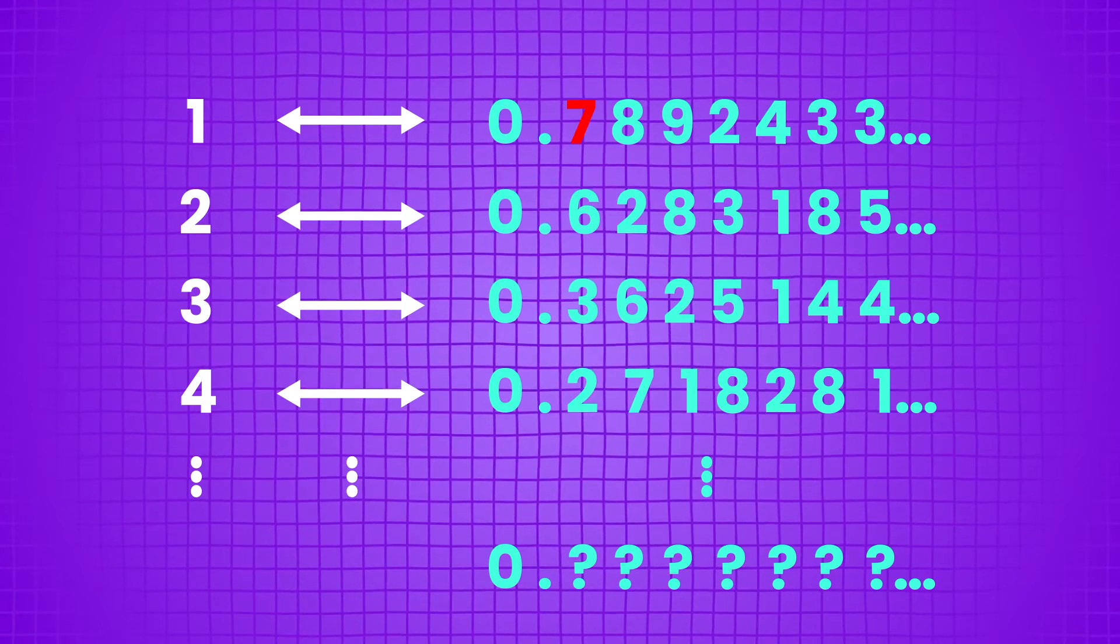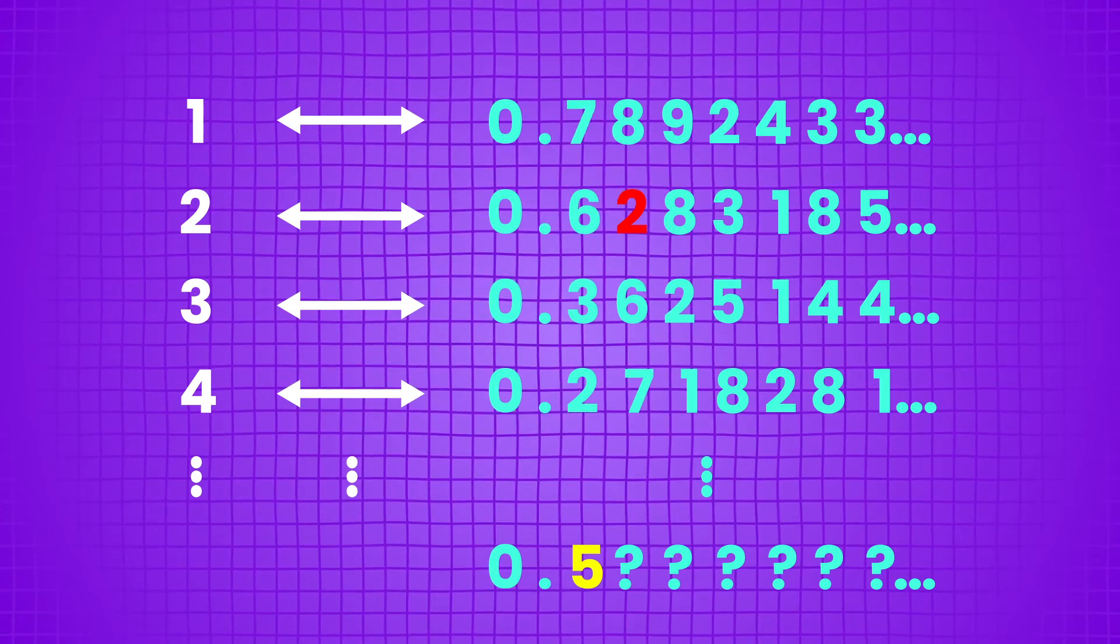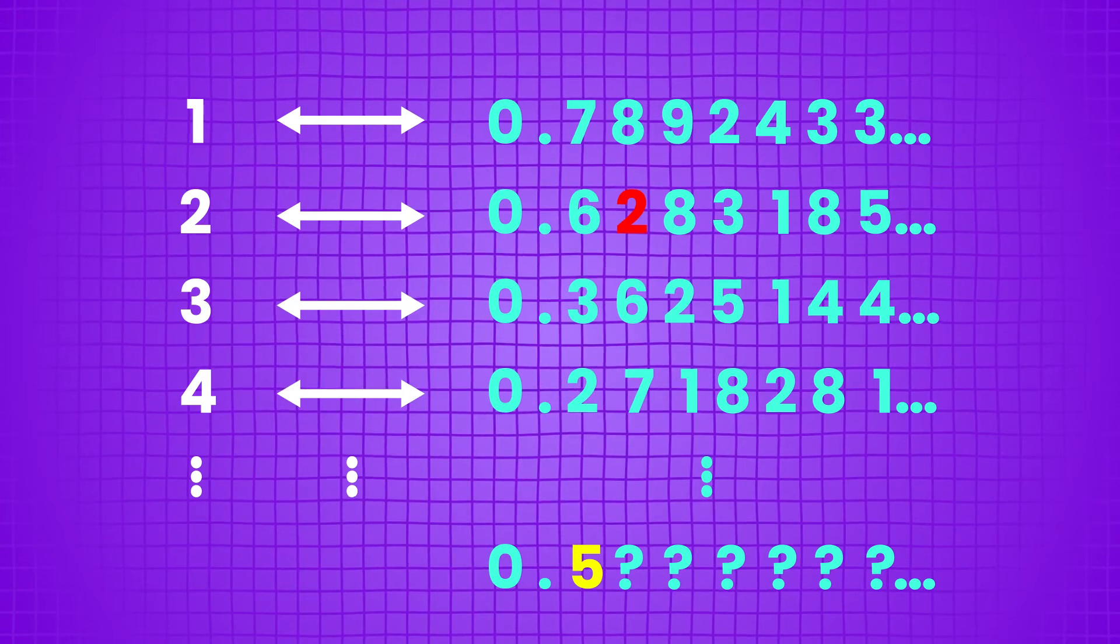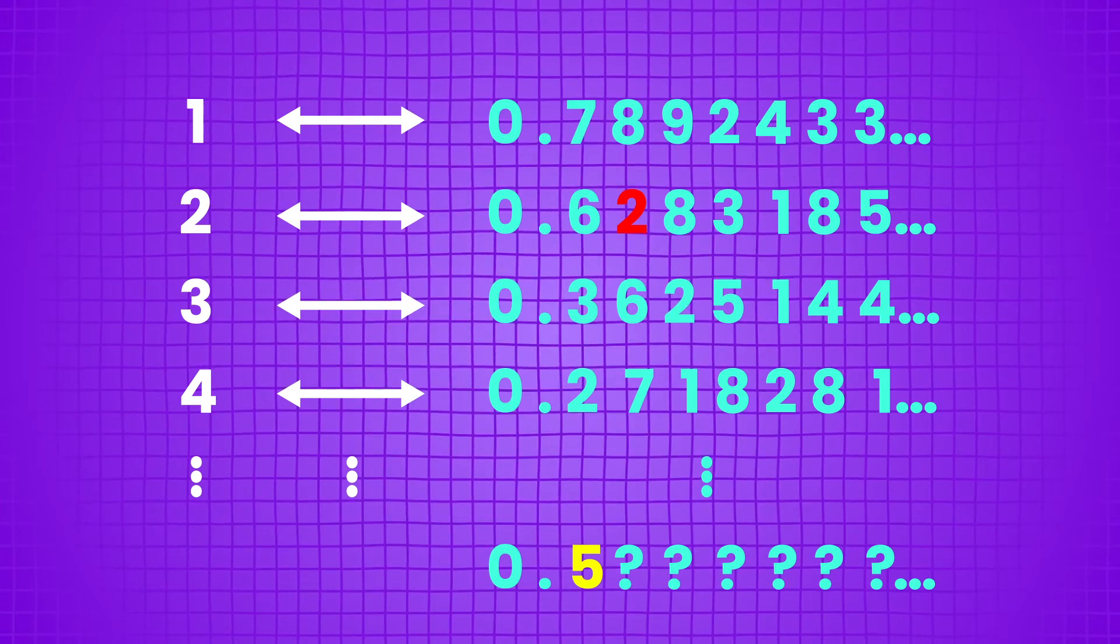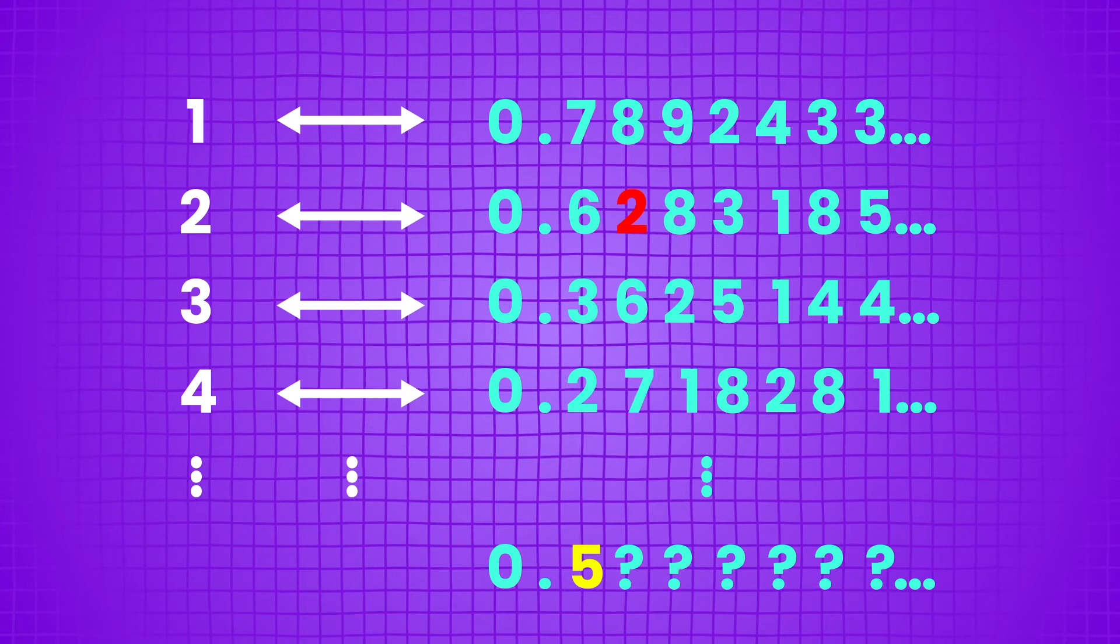Take the first digit of the first decimal on your list, seven, and make the new decimal's first digit anything but seven, say five. Then look at the second digit of the second decimal on your list, two, and make the new decimal's second digit anything but two, say eight.